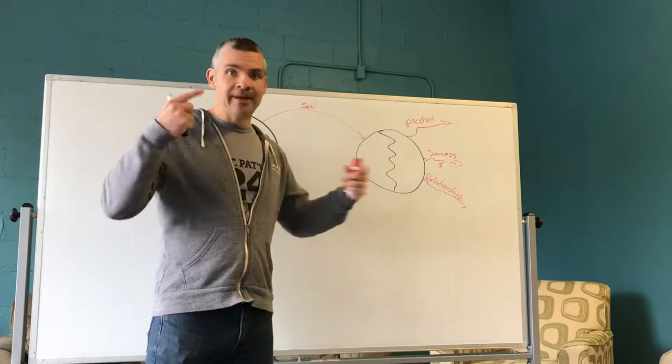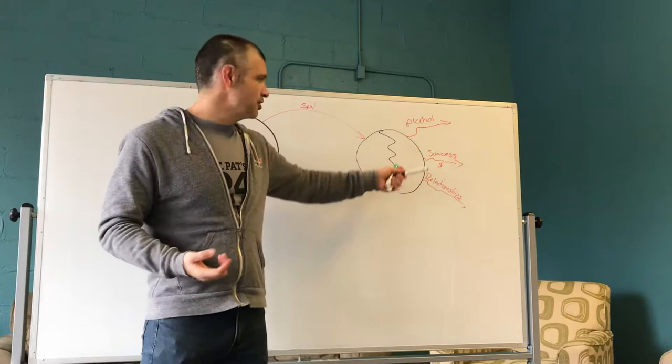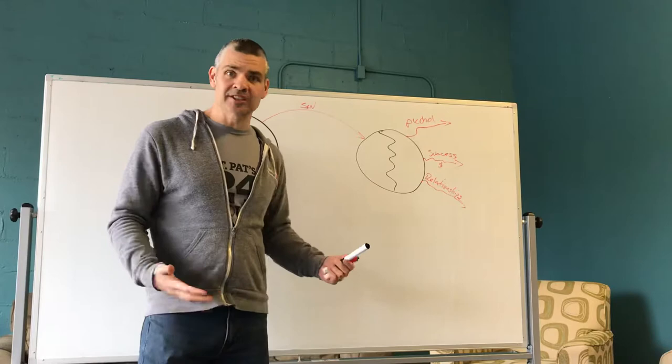Depression can be a disease. Depression can be caused by chemicals, chemical imbalance in your brain. But it can also be a result of our choices. Like this stuff that we're pursuing doesn't solve our brokenness problem. And so we get sad about it. We get depressed about it. We get anxious about it.